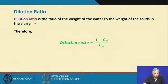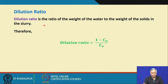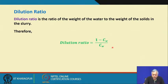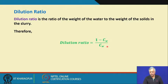What is the dilution ratio? The dilution ratio is the ratio of the weight of water to the weight of solids. If Cw is the weight fraction of solids, then the weight fraction of water is 1 minus Cw. So the dilution ratio is defined as weight of water divided by weight of solids in the slurry.